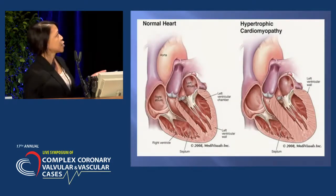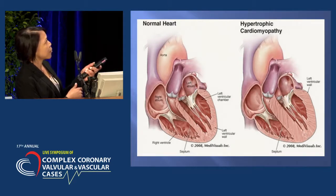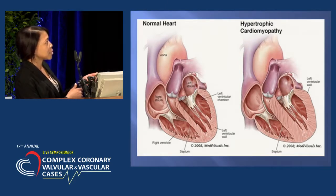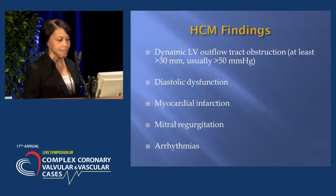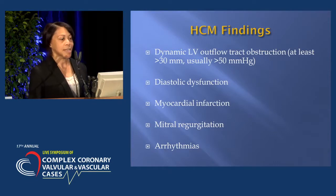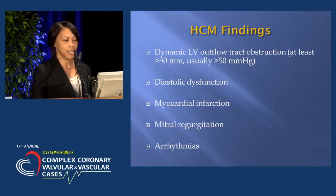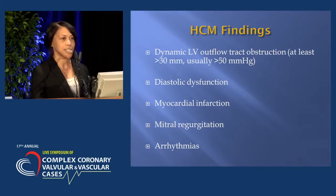This is a depiction of a normal heart — the ventricles are normal and the septum is normal. In hypertrophic cardiomyopathy, the septums are extremely large. In HCM findings, you have dynamic left ventricular outflow tract obstruction — at least less than 30 millimeters, but usually greater than 30 millimeters, and typically greater than 50 millimeters.